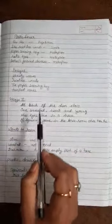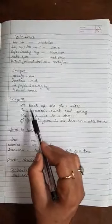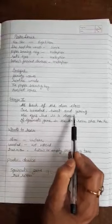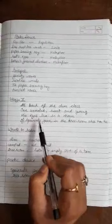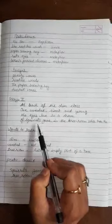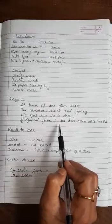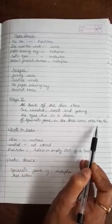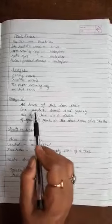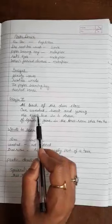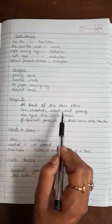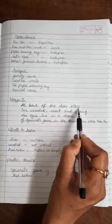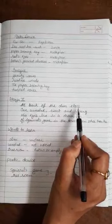Now come to the second stanza. At back of the dim class, one unnoted, sweet and young. His eyes live in a dream of a squirrel's game in the tree room. Other than this, in this class, there is a sweet and young boy is also sitting at the back of the dim class.